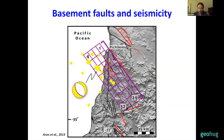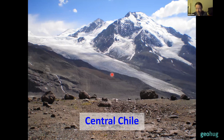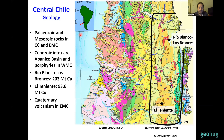That was the introduction. Now I'm going to show some studies done in different parts of the Andes, beginning with central Chile. Here is a regional geological map of central Chile on the western margin of South America, from the Chilean geological survey. Here is the city of Santiago, the capital. From west to east we have the Coastal Cordillera — composed mostly of Paleozoic metamorphic rocks and Mesozoic intrusive and volcanic rocks — which was the position of the magmatic arc during the Jurassic and early Cretaceous.